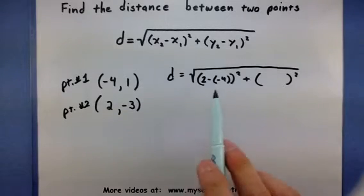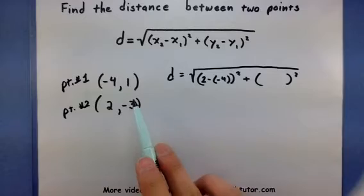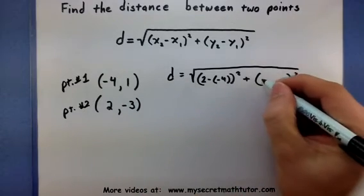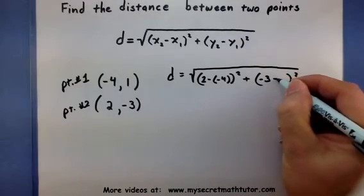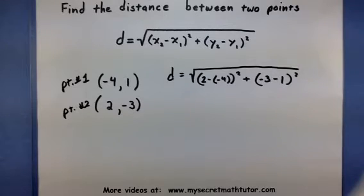Let's do the same thing with the y's. So y2 minus y1, second y coordinate minus the first y coordinate. Now once you have everything plugged into the formula, it really just comes down to a matter of simplifying things.